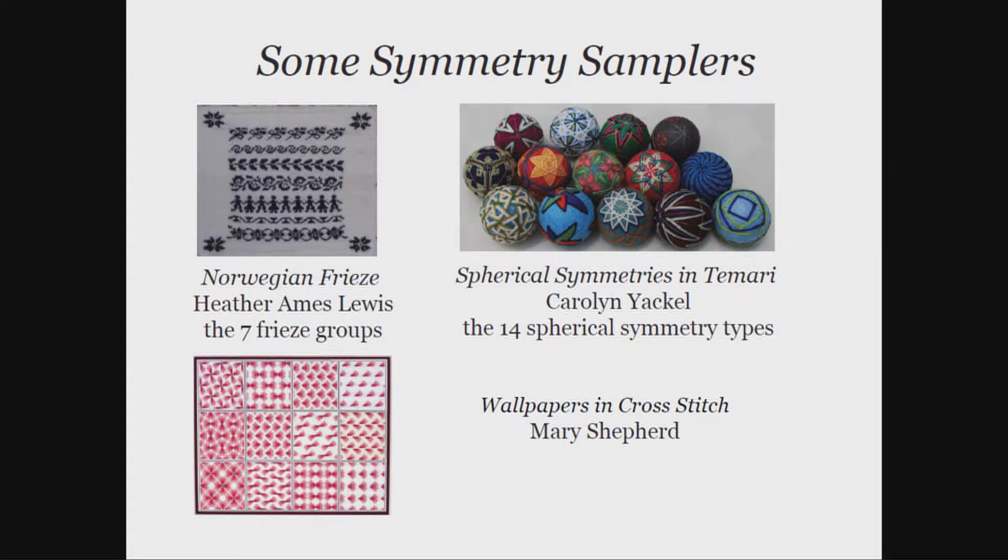Here's another sampler that's a little bit different. This is Wallpapers in Cross Stitch by Mary Shepard — actually the earliest symmetry sampler that I know of. But there aren't 17 there. The problem is that this is Counted Cross Stitch, done on a square grid, and not all of the wallpaper groups are compatible with a square grid — you actually lose five of them. So in this case there are only 12 wallpaper groups possible in Counted Cross Stitch, and this artwork proves that you can get those 12, with one pattern for each.